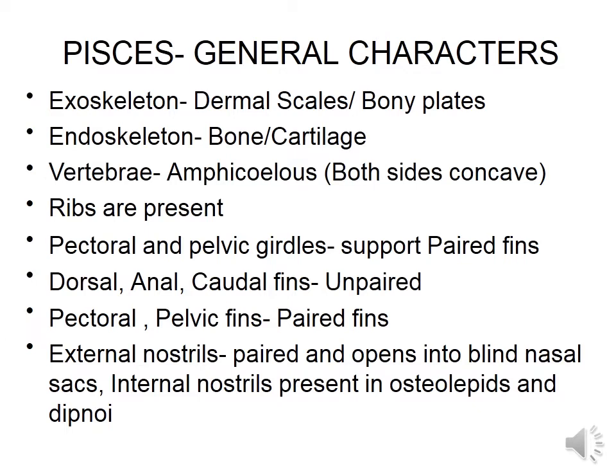Ribs are present and well defined in fishes. Pectoral and pelvic girdles support the paired fins. The paired fins are the pectoral and pelvic fins, supported by pectoral and pelvic girdles. Unpaired fins are the dorsal fin on the dorsal side, the anal fin behind the pelvic fin, and the caudal fin at the posterior end.